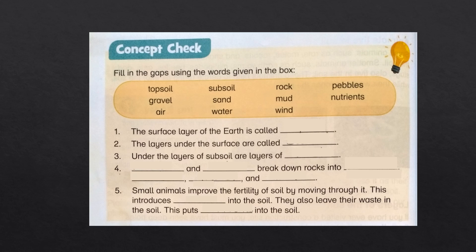Now this is a concept checkbox for you — solve this in your book, not in your copy. Fill in the gaps using the words given below. Number one: the surface layer of the earth is called dash — what do we call the topmost layer of the earth? Topsoil. Next: the layers under the surface are called dash — what is below the topsoil? Subsoil. Under the layers of subsoil are layers of dash — rock.